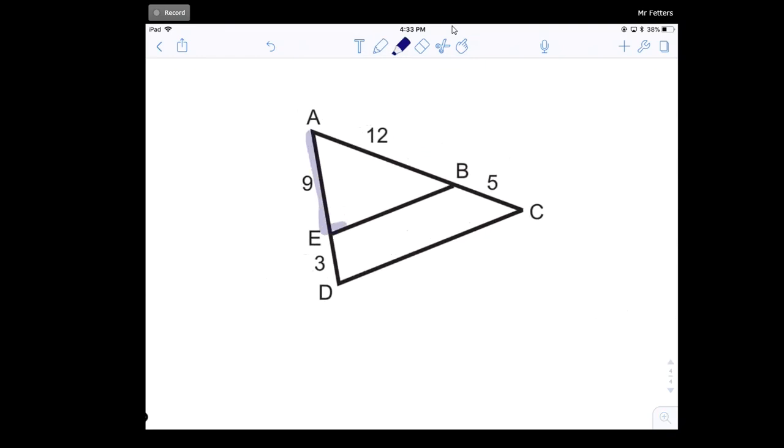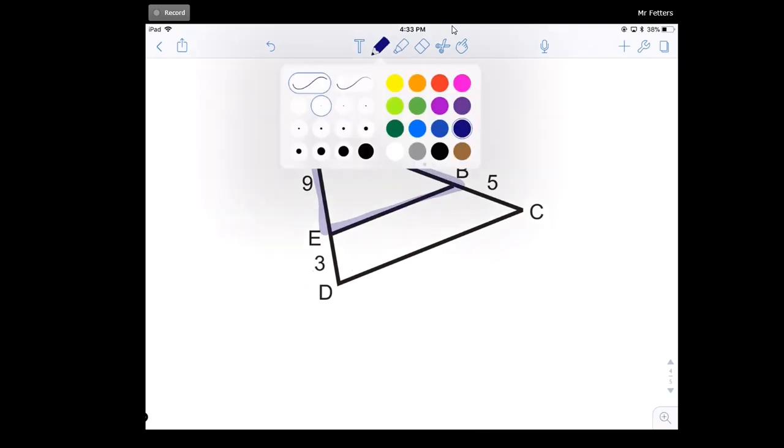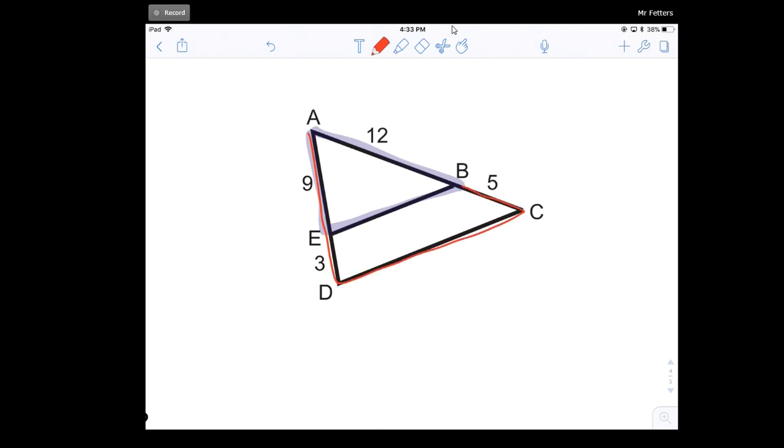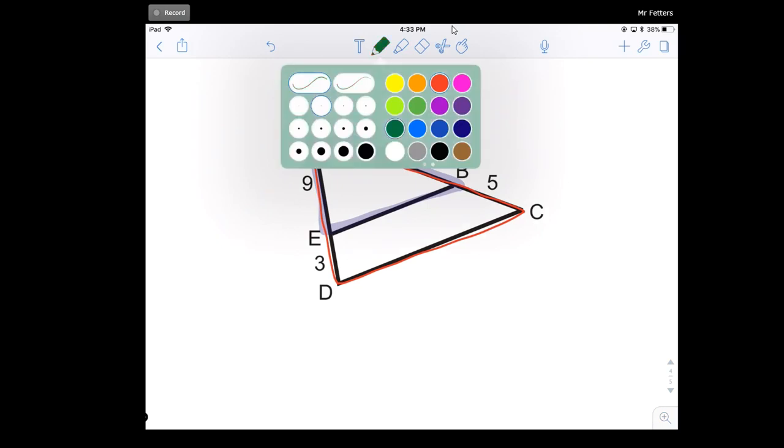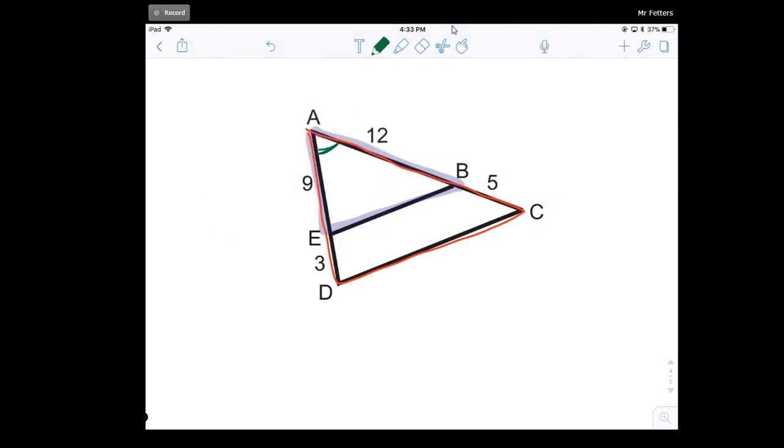I have a triangle here, you can see, then I have another triangle right here. So you can see my two triangles. And if you notice, they share a common angle, and that common angle is angle A.